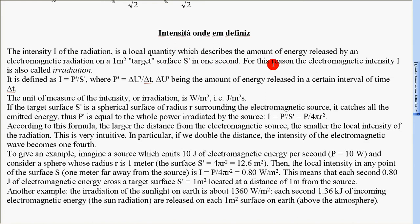For this reason, the electromagnetic intensity I is also called irradiation. It is defined as I = P'/S' where P' = ΔU'/ΔT.